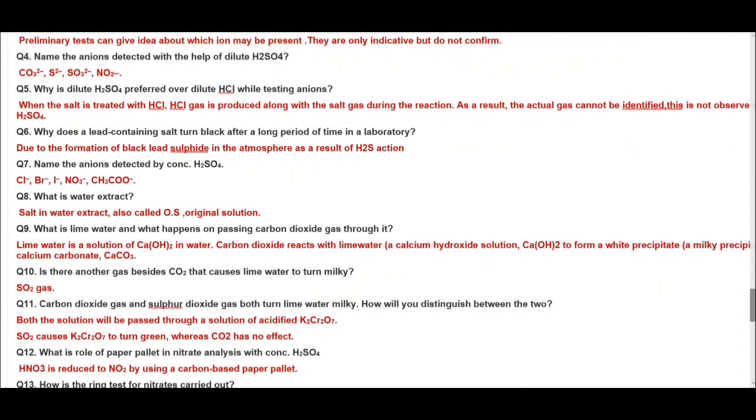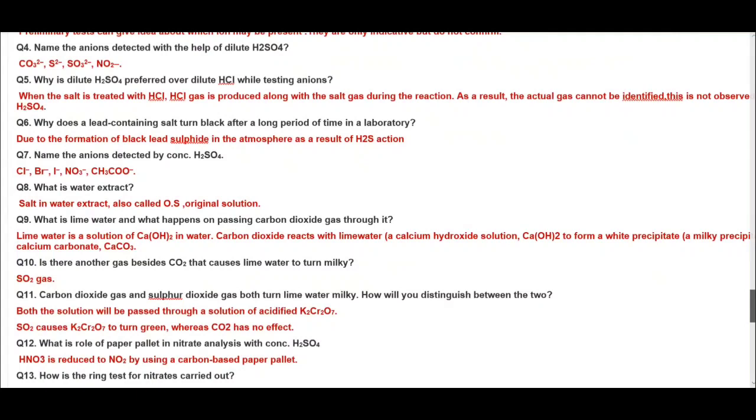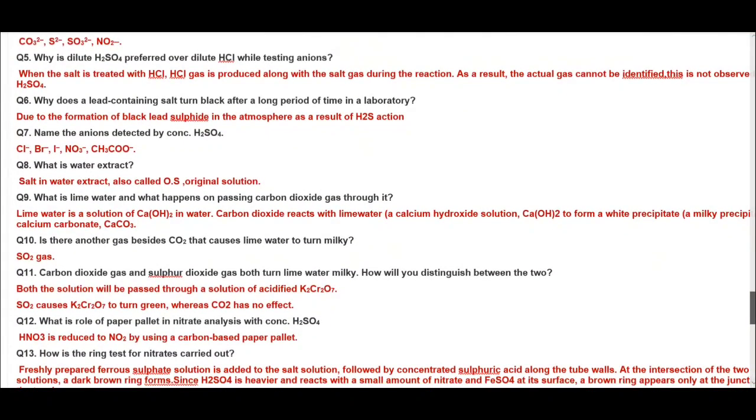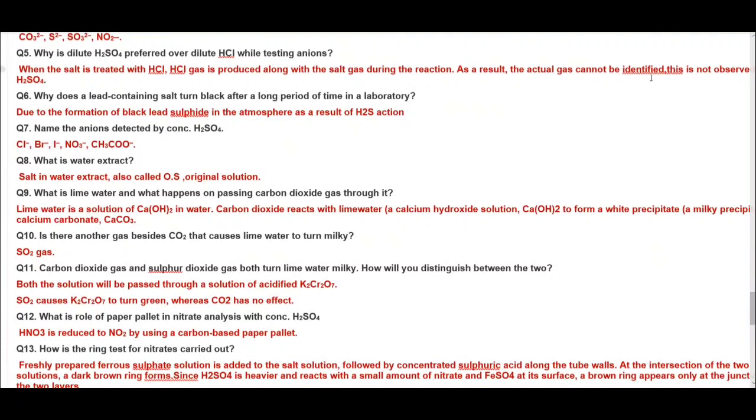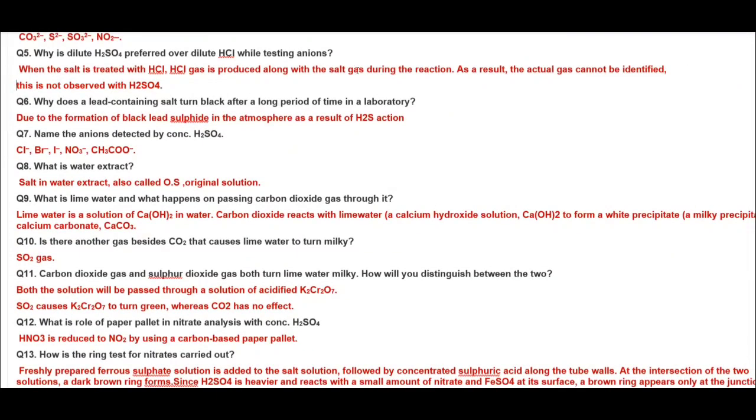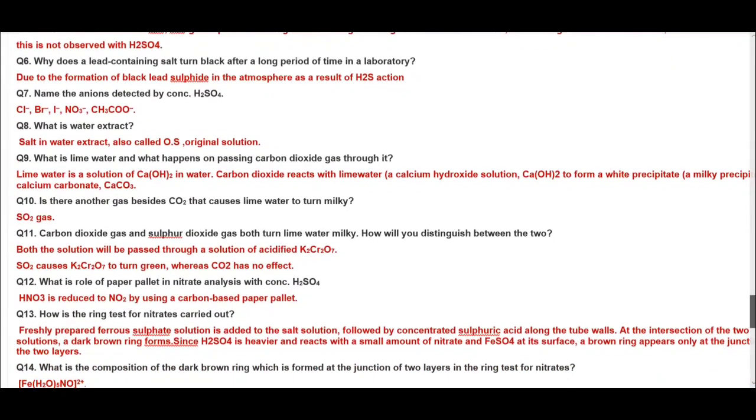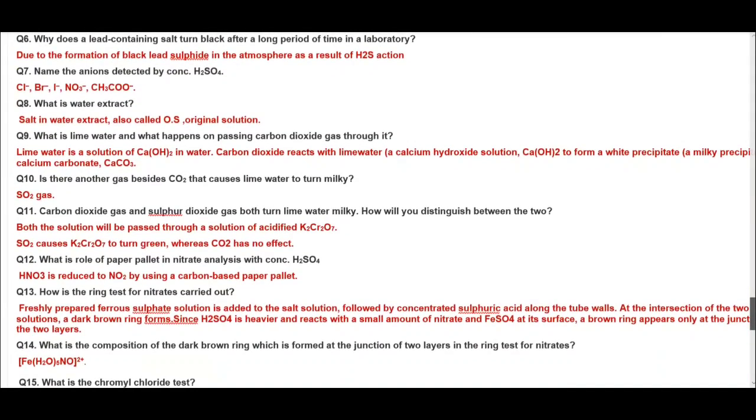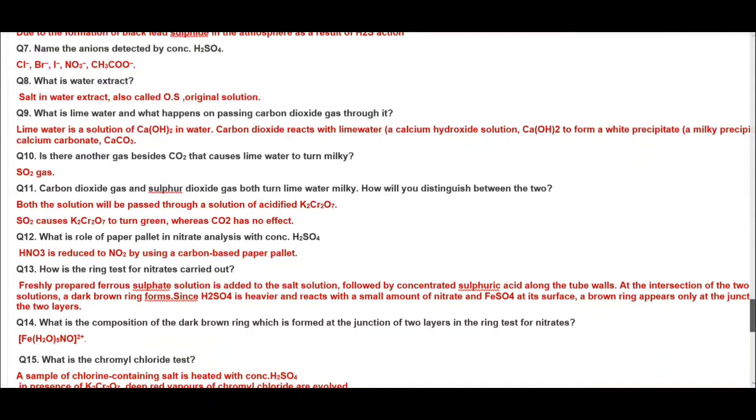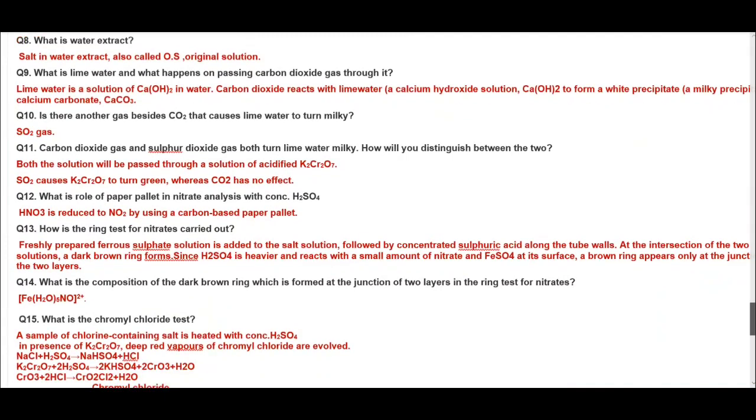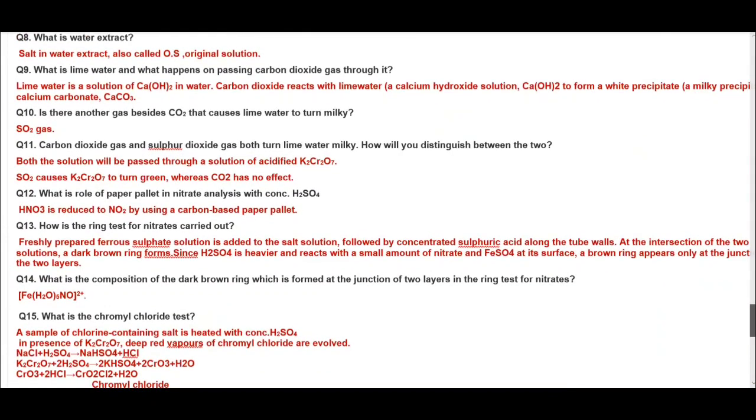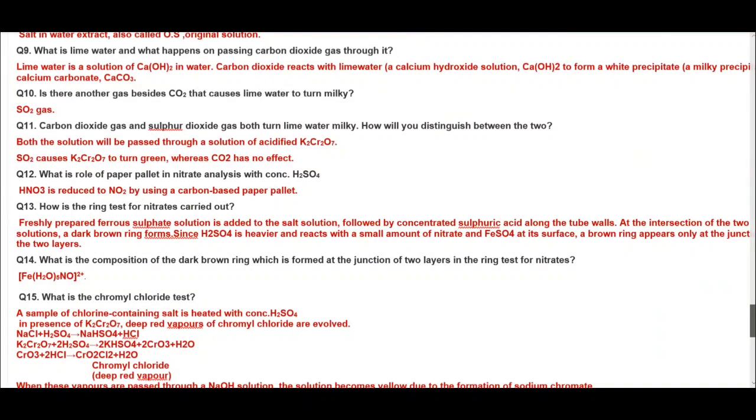Name the anions detected with the help of dilute sulfuric acid. So these are the examples. Why is dilute sulfuric acid preferred over dilute HCl while testing anions? When the salt is treated with HCl, HCl gas is produced along with the salt gas during the reaction. As a result the actual gas cannot be identified. So with sulfuric acid this problem is not observed. Next we have, why does the lead containing salt turn black after a long period of time in laboratory? Due to formation of black lead sulfide in atmosphere as a result of H2S action. Name the anions detected by concentrated sulfuric acid: fluoride, bromide, iodide, nitrate, acetate. What is water extract? Water extract is nothing but a solution in water, it's also called OS or original solution.